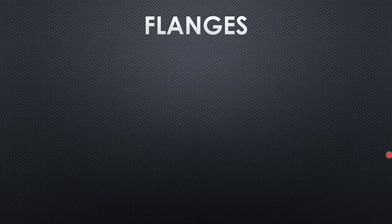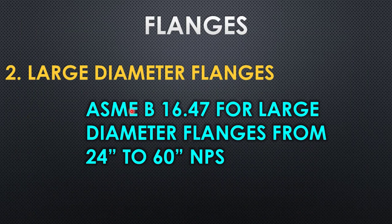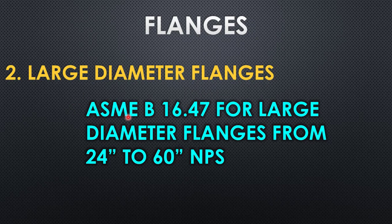Now let's go to the second category — large diameter flanges. These are classified into two types because the dimensions are completely different for flanges above 24 inch, which is one reason why two different standards are made. The large diameter flange dimensional standard is ASME B16.47, and the description is large diameter flanges for 24 to 60 inch. The constraint is that this standard only covers up to 60 inch — not above.